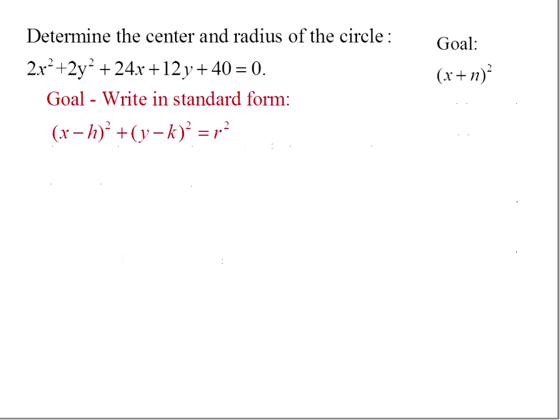Now, we want to write in this form. We know we want to end up with x plus or minus some number squared. If we think about multiplying that out, we'd have (x + n)(x + n), which is x² + 2nx + n². So we want to get the x terms of our circle in this form: x² + 2 times some number times x plus that same number squared.